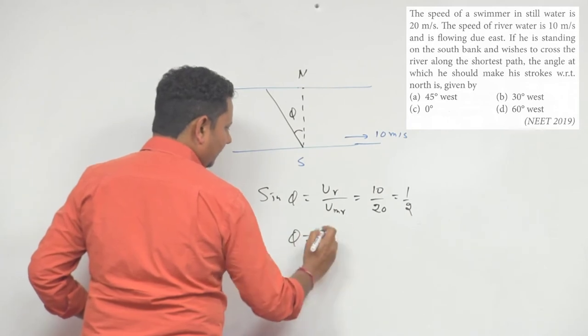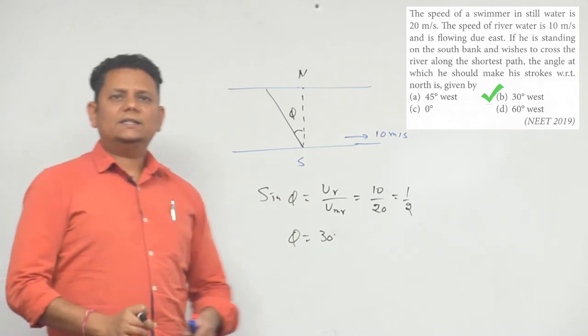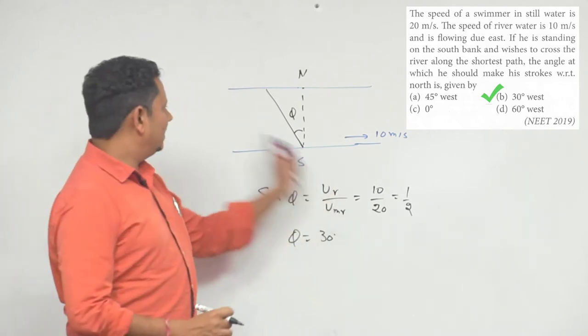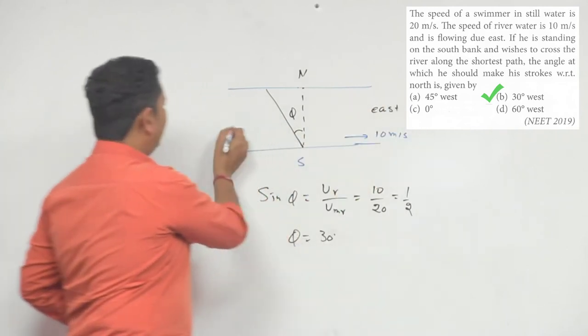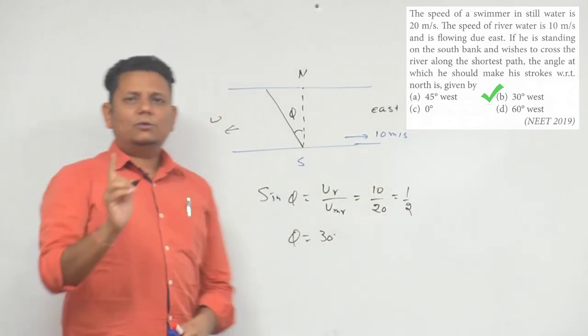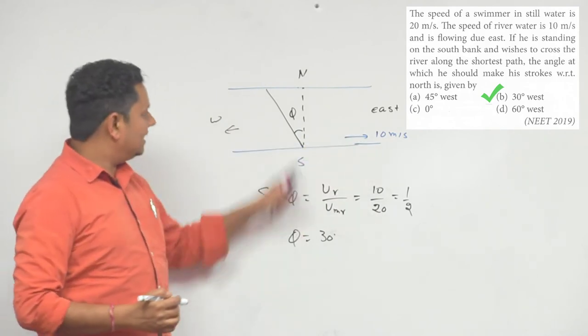And 30 degrees will be from north. Again, the right answer will be equal to 30 degrees west. You will travel in this direction. This is my east direction and this will be the west direction. Now, in some questions, this same question is given where you have to tell the angle from the river bank.